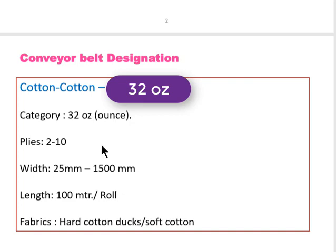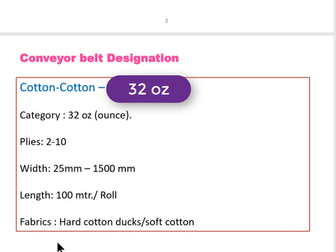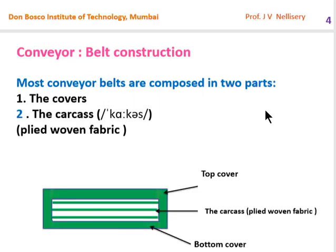The thickness of the belt can be made of a number of plies — there can be 2 ply, 3 ply, 8 ply, or 10 plies depending on the requirement. The width of the belt can be somewhere between 25 mm to 1500 mm, and the total length can be 100 meters or less per roll. The fabric used is hard cotton duck or soft cotton fabric.